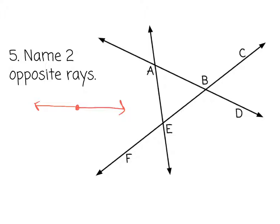So let's focus on point E here. We could have EB, and its opposite ray would be EF. So EB, again with the ray symbol, and EF would be opposite rays.